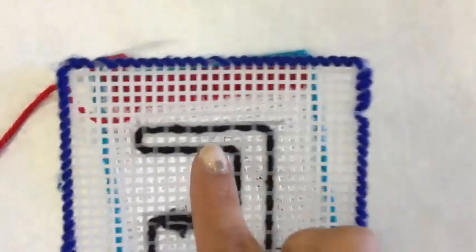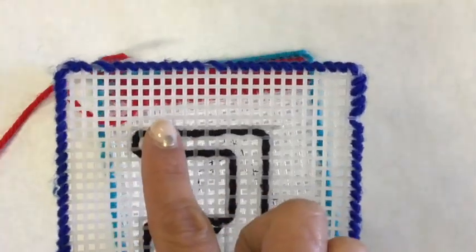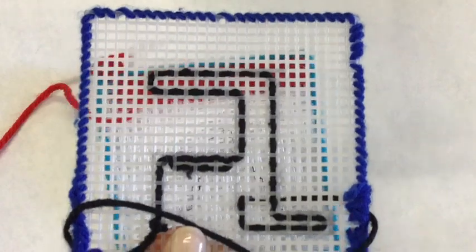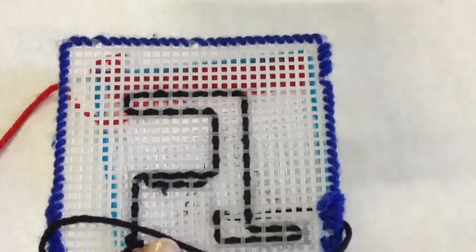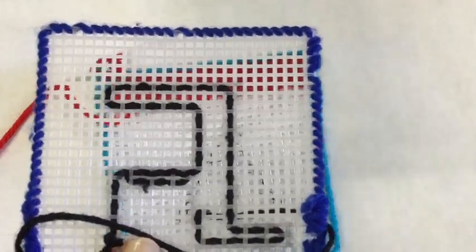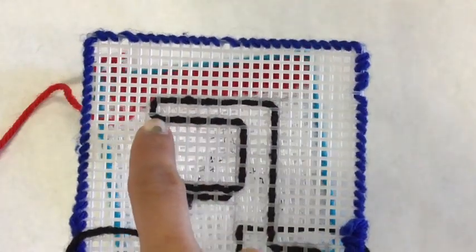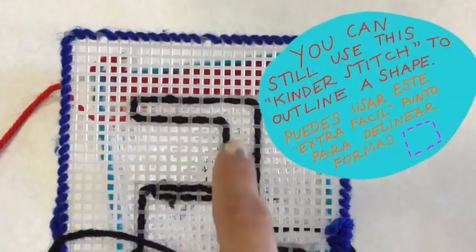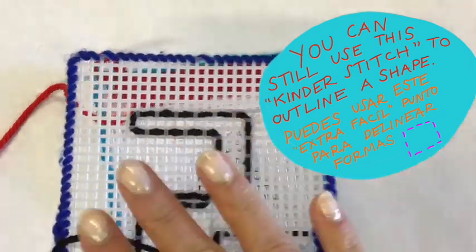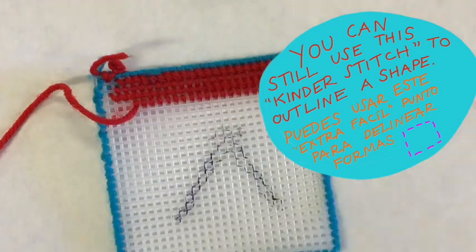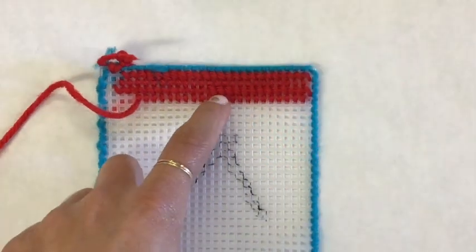There's another stitch that a lot of kids are tempted to use - it's a simple up and down stitch. It's great, but I call this the kindergarten stitch. As easy as it is, it does leave way too much plastic canvas in between. So we're going to leave the kindergarten stitch to be a thing of the past and you are going to be doing the tent stitch.